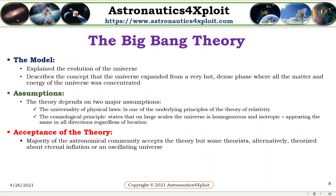and the cosmological principle, which states that on large scales, the universe is homogeneous and isotropic, appearing the same in all directions, irrespective of location. The majority of the astronomical community accepts the theory, though some theorists theorize about eternal inflation and an oscillating universe.